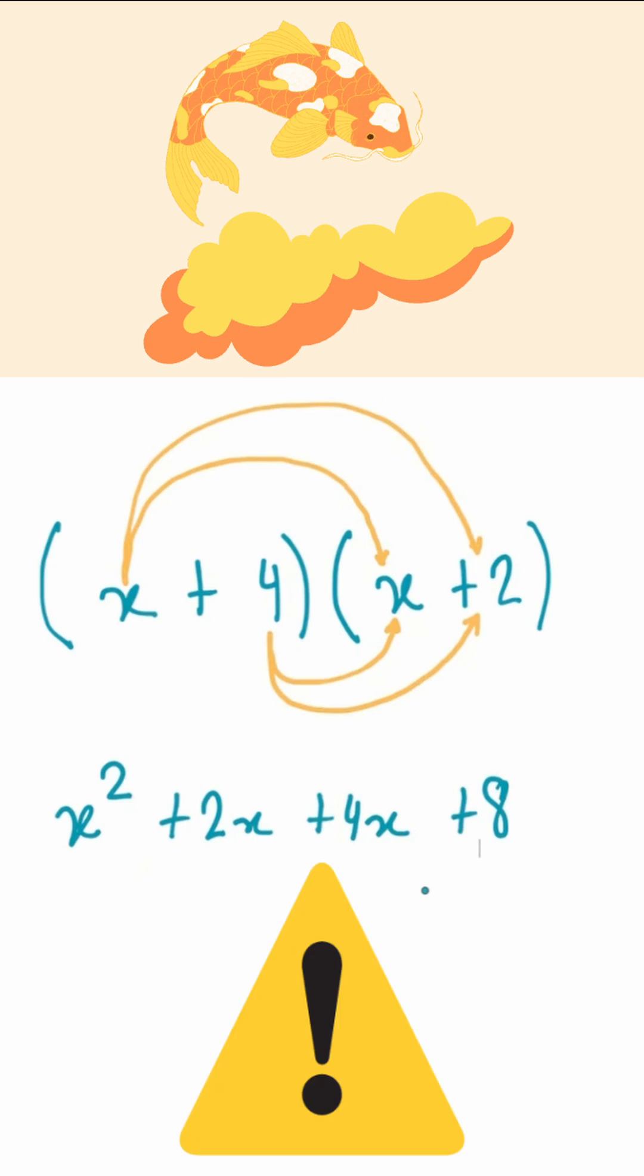However, there is one key step that is crucial when expanding binomials, and that is the simplification process. Here, we can see that we have some like terms. In this case, 2x and 4x.